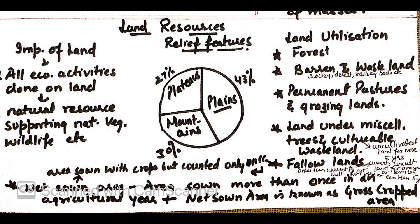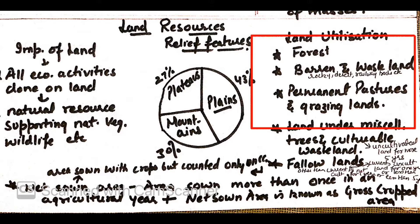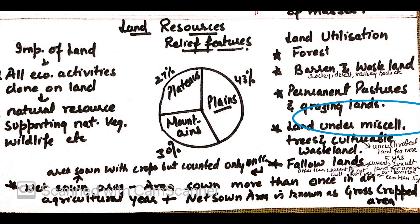Next is land utilization. This will include land under forest. Second, barren and wasteland, which includes rocky and desert areas, land used for railway tracks and other purposes. Next one is land in pastures and grazing lands. Next, land under miscellaneous trees and culturable wasteland. Culturable wasteland means uncultivated land for more than 5 years.